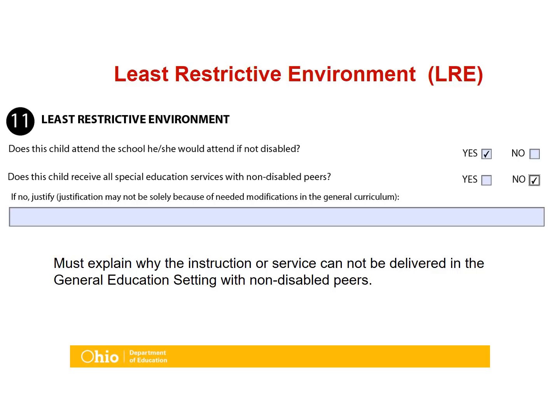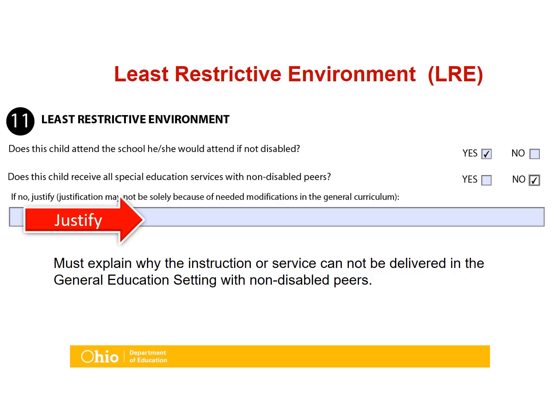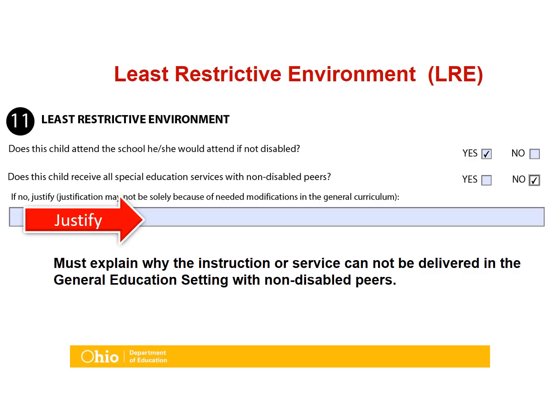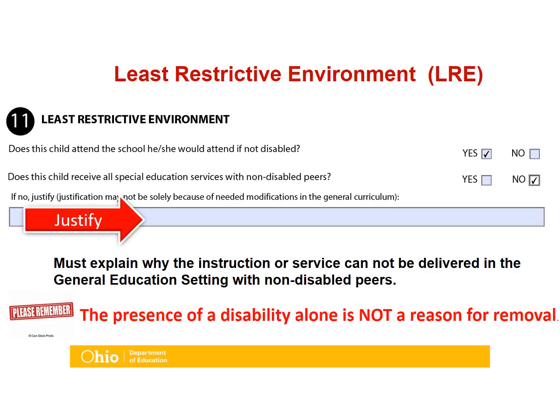The Least Restricted Environment section requires a justification statement if a child receives services, including related services, anywhere other than in the general education setting with non-disabled peers. When students are removed from the general education classroom, districts must explain why the instruction cannot be delivered in the general education setting with non-disabled peers with access to accommodations and modifications. Please note that the presence of a disability alone is not a reason for removal.